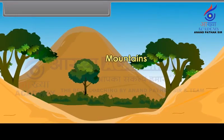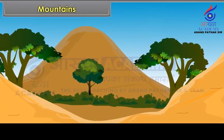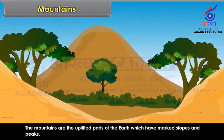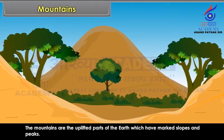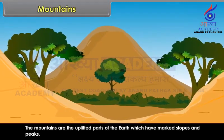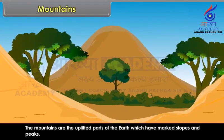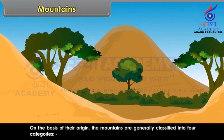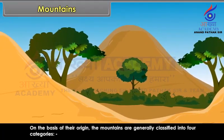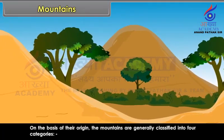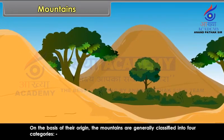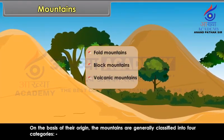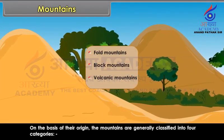Mountains are the uplifted parts of the Earth which have marked slopes and peaks. On the basis of their origin, the mountains are generally classified into four categories: Fold Mountains, Block Mountains, and Volcanic Mountains.